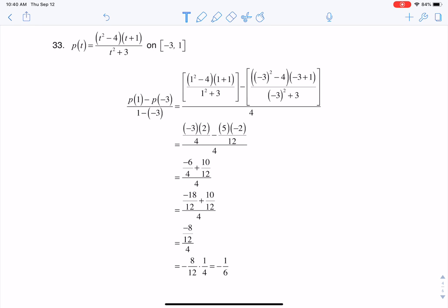This question was asking, how do you find the average rate of change for this function on this interval? So how do I find the average rate of change of P of T when I'm on the interval negative 3, 1?